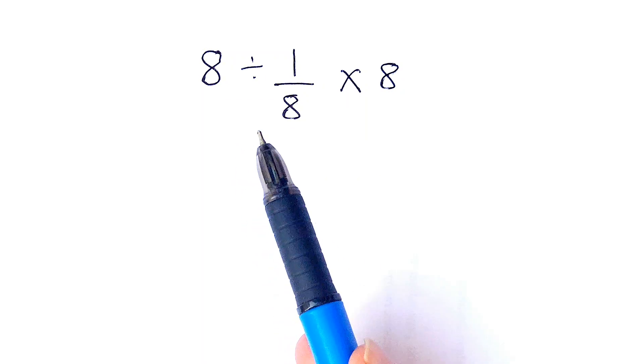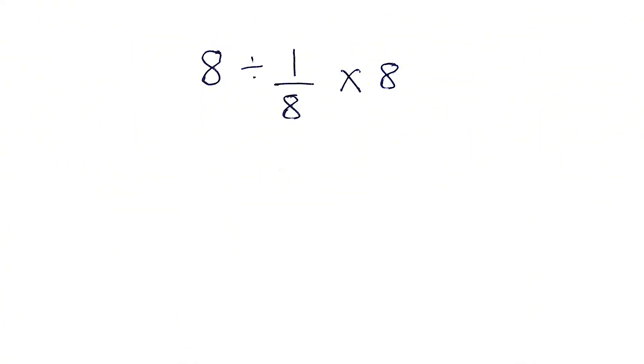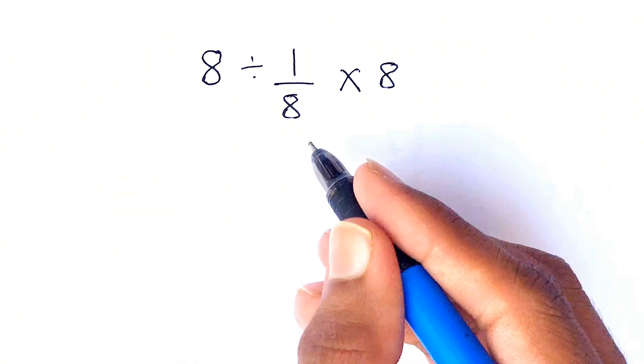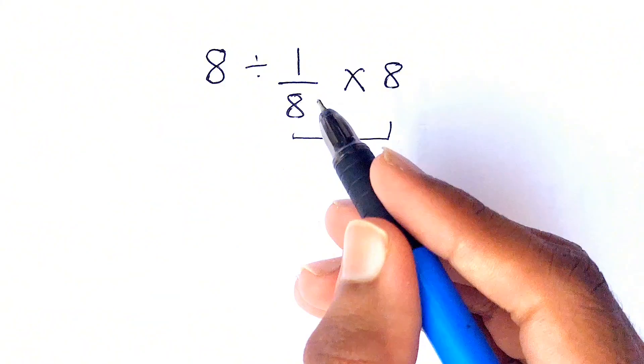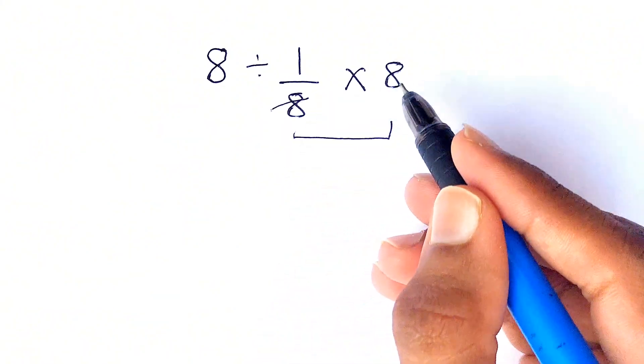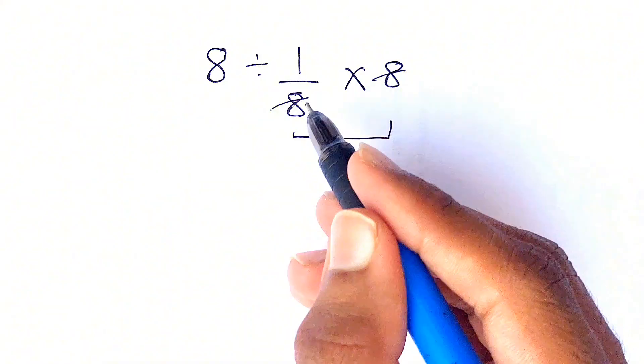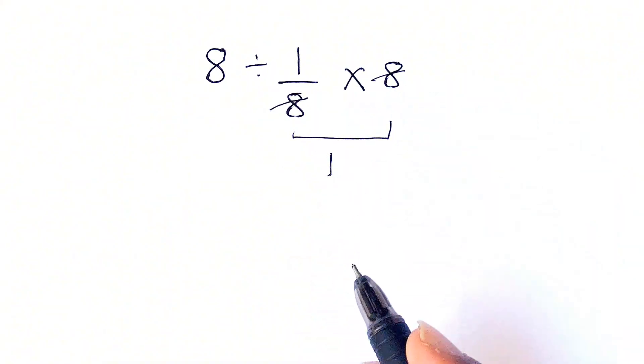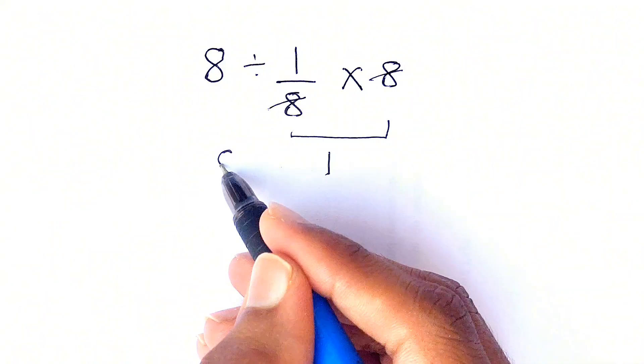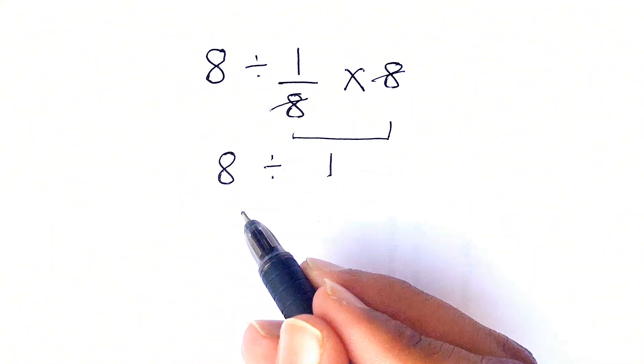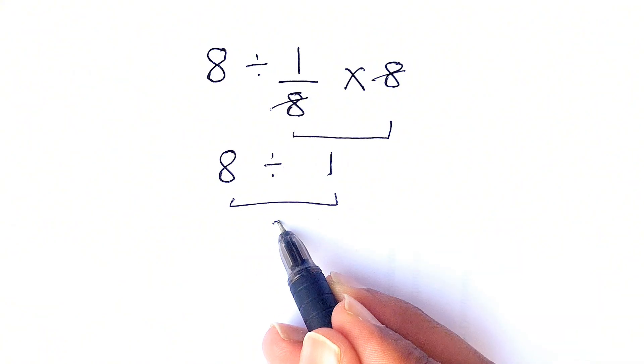Welcome back guys, so today we have the expression 8 divided by 1 over 8 times 8. Most people will solve this by simply canceling this 8 and this 8 because they are multiplying the fractions, and then they are left with 1 and 8 divided by 1, so 8 divided by 1 gives us 8.